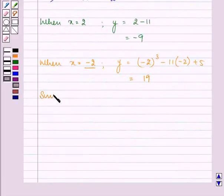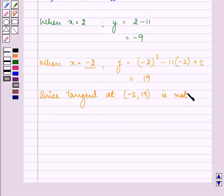Since the tangent at minus 2 comma 19 is not y equal to x minus 11, when the value of x is minus 2, the value of y is coming out to be 19. But it is not corresponding to the equation of the tangent, that is y equals x minus 11.